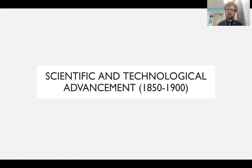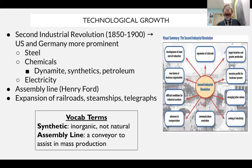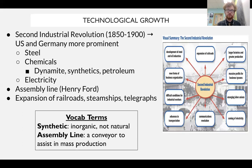We'll look at some scientific and technological advances. The late 19th century is the second industrial revolution — another phase of the so-called industrial revolution. The second industrial revolution is basically focused on these three industries: steel, chemicals, and electricity.